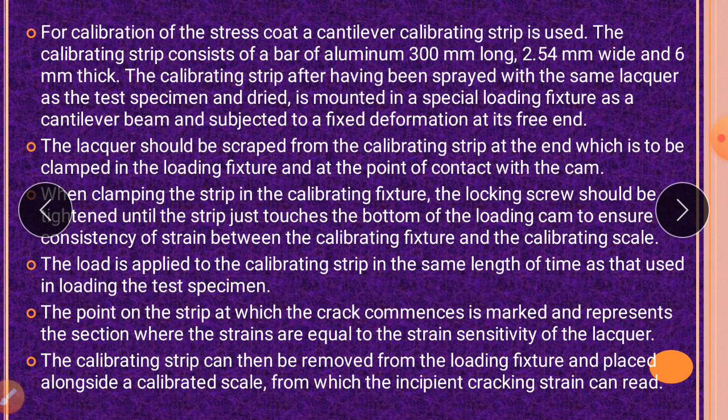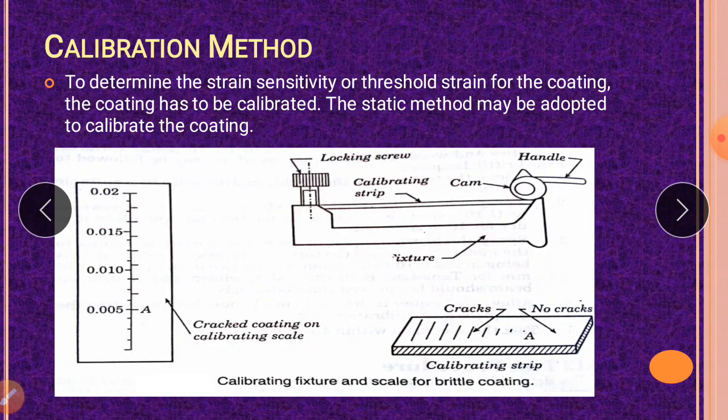Thank you students. I hope you have understood this method of calibration. You have to use one special fixture. One end is fixed, one end is free. By using a cam handle, you apply the load. The strip is going to be bent. It will act as a cantilever beam.